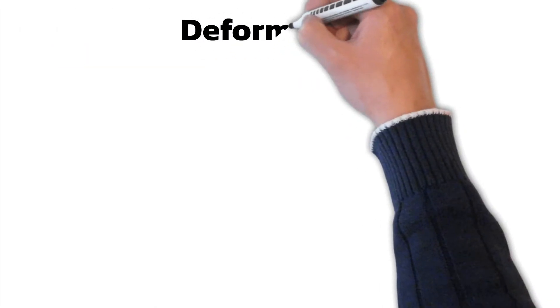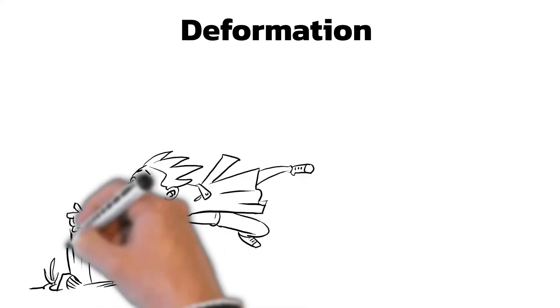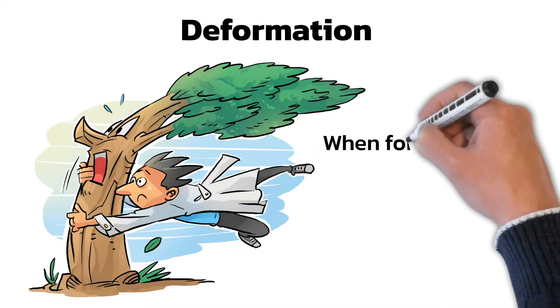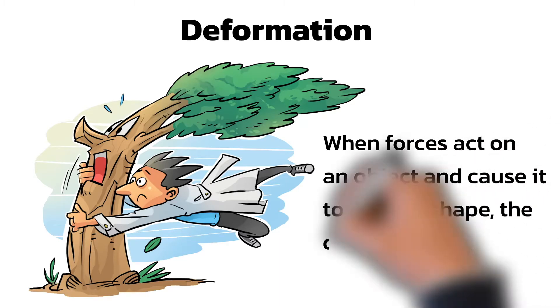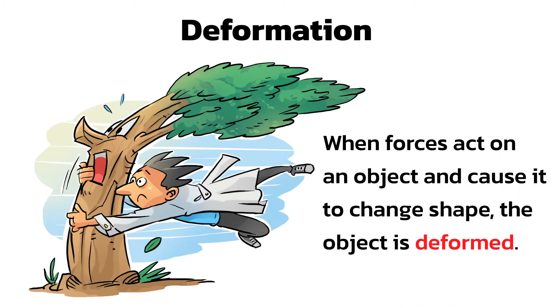When forces act on an object and cause it to change shape, the object is said to be deformed. In this case, the force of the wind on the tree causes it to bend. This is known as deformation.